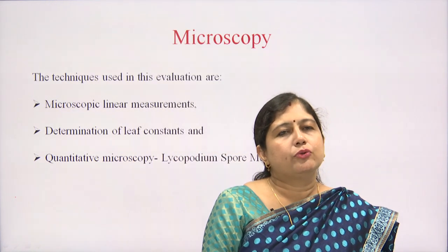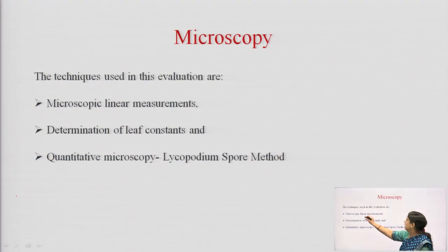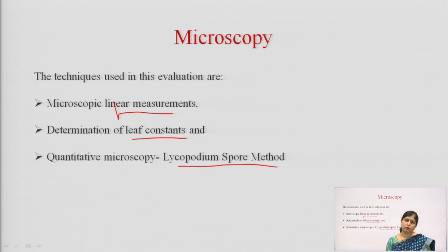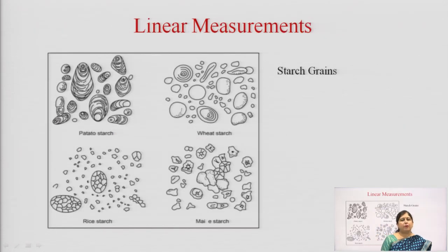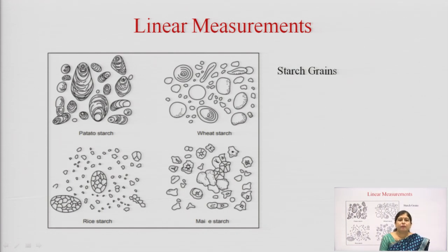We have already understood that microscopic evaluation mainly deals with three parts: linear measurement, determination of the leaf constants, and quantitative microscopy by the Lycopodium Spore method. To begin with, we will have a brief about linear measurements. Plants have certain ingredients — for example, starch grains, calcium oxalate crystals, phloem fibers, or other peculiar structures — which we can determine using certain microscopic techniques.